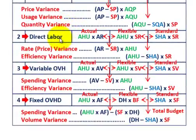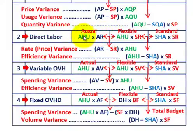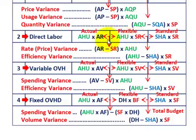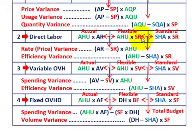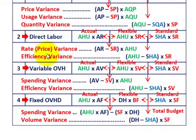For direct labor, the rate or price variance is the difference between our actual and flexible amount. The common factor we can factor out is actual hours used, and the difference is between the actual hourly rate and the standard rate. So: (actual rate minus standard rate) times actual hours used is our rate or price variance. For the efficiency variance, that's between our flexible and standard amount; the common factor is standard rate. So: (actual hours used minus standard hours allowed) times standard rate is our efficiency variance.